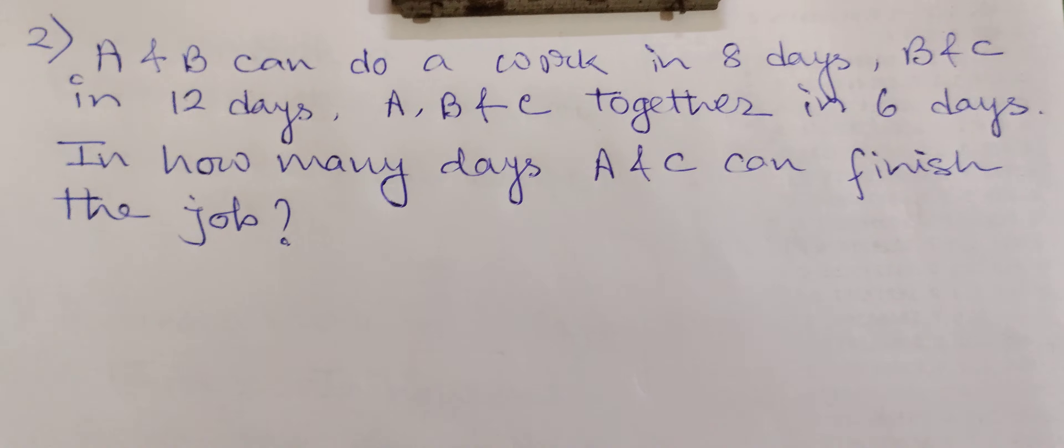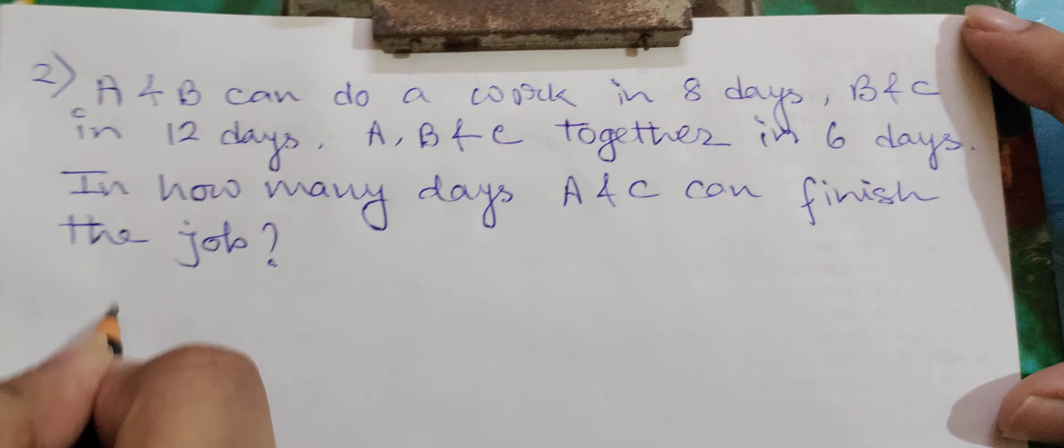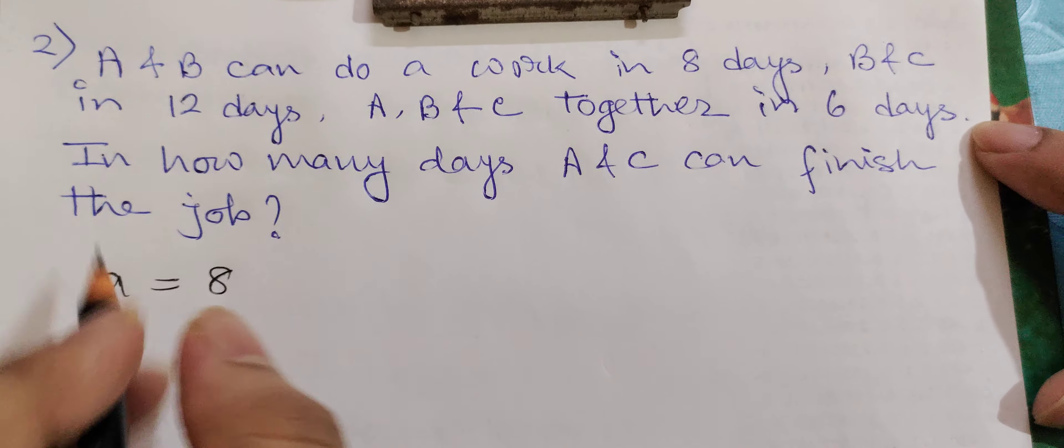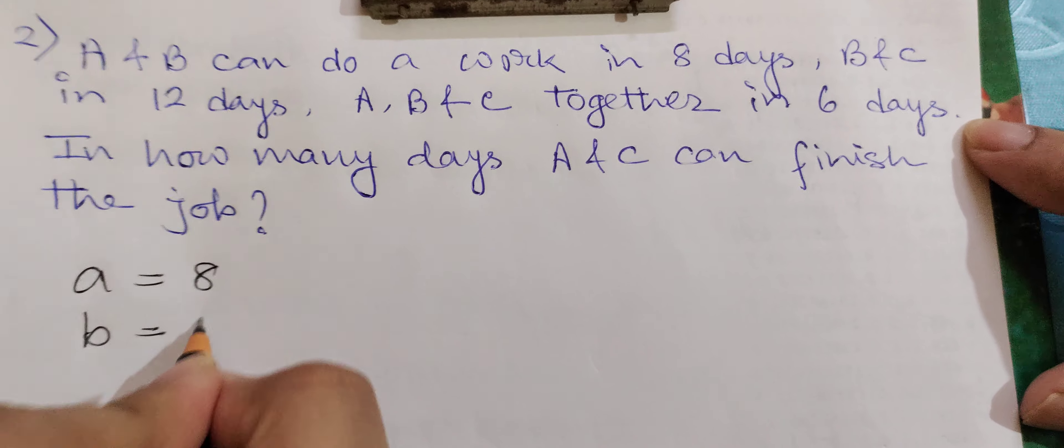A and B can complete a work in 8 days, so a equals 8. B and C can do that in 12 days, so b equals 12.